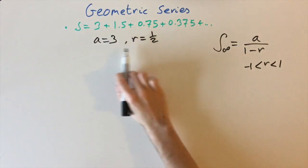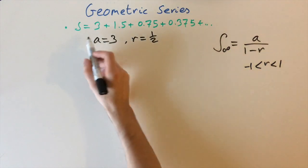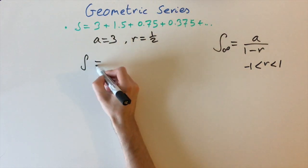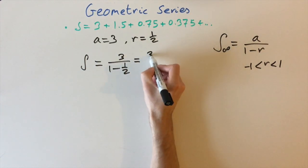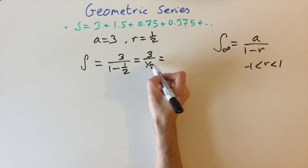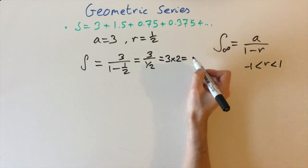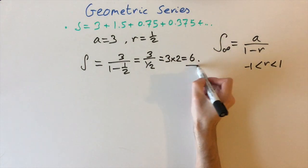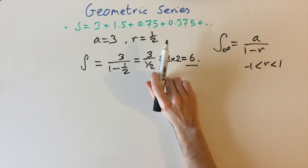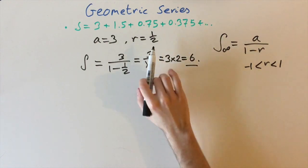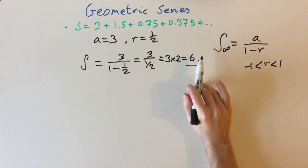For this series, r is one half, so it falls within the valid range and we can use the formula. Plugging in: S = 3 over (1 minus one half), which is 3 over one half. Dividing by a fraction, we flip and multiply: 3 times 2, which equals 6. This is quite amazing — we're adding an infinite number of progressively smaller terms, lots of decimals and fractions, yet they all sum to a nice whole number: 6.